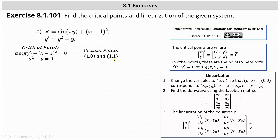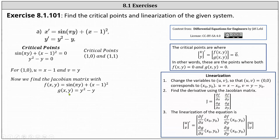Now we can determine the linearization. We first change the variables to u and v, where u equals x minus x sub zero and v equals y minus y sub zero, where x sub zero comma y sub zero is a critical point. Beginning with the critical point one comma zero, we have u equals x minus one and v equals y. Next, we determine the Jacobian matrix by finding the partials of f with respect to x and y, and the partials of g with respect to x and y. Here, f of x comma y equals sine of pi y plus the square of x minus one, and g of x comma y equals y squared minus y.